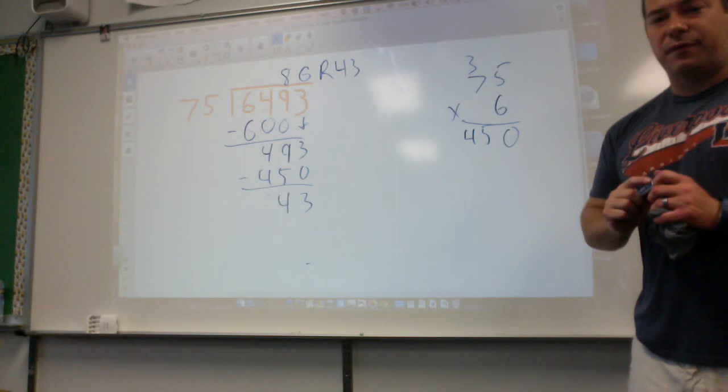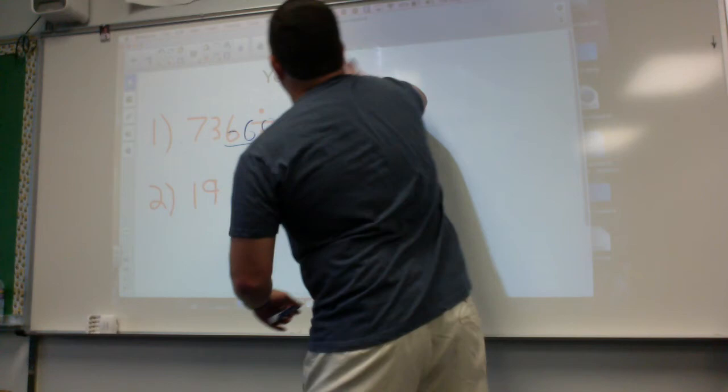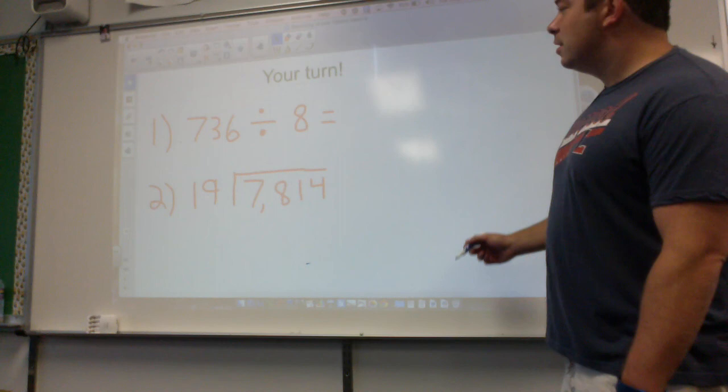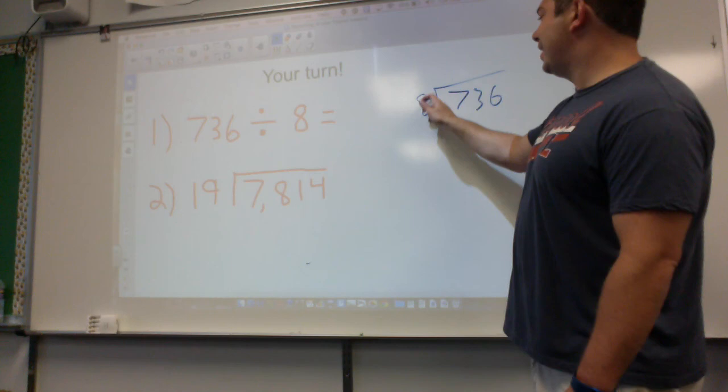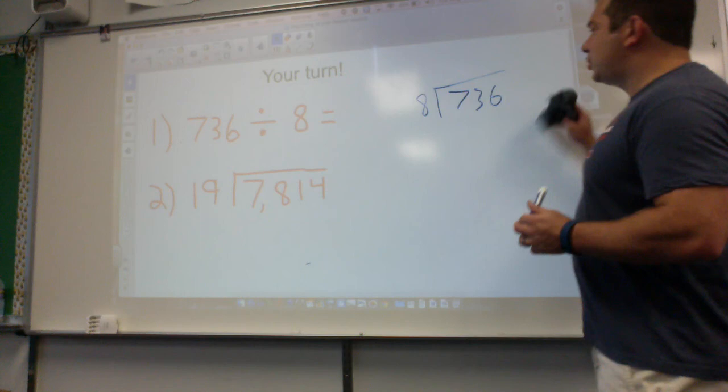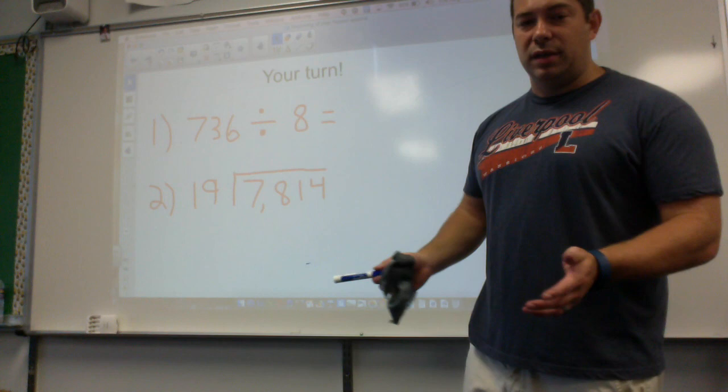Now you have two problems to do for me this evening or this morning or whenever you're doing this. 736 divided by 8. Let's make sure we do it as 736 divided by 8. How many times can 8 go into 736? And this one's written out the work way for you. How many times can 19 go into 7,814? Show your work in your notebook. So let's not get out the calculator and get our answers. If you're doing a calculator it's going to give you a decimal. I want to see your remainder answer. Good luck, we'll see you soon.